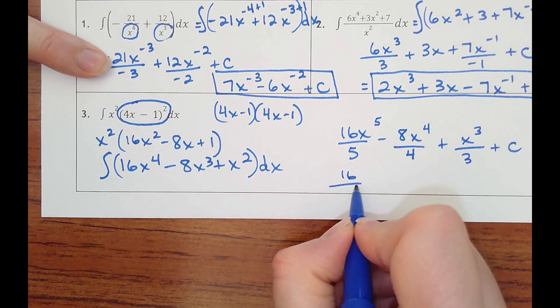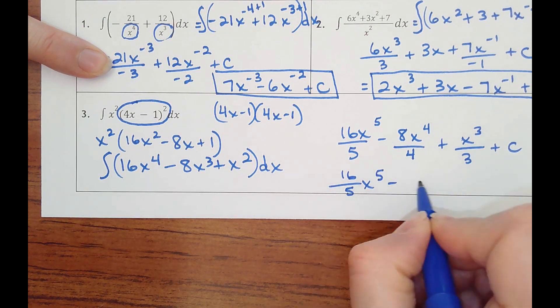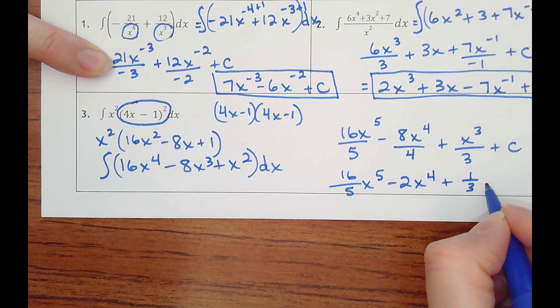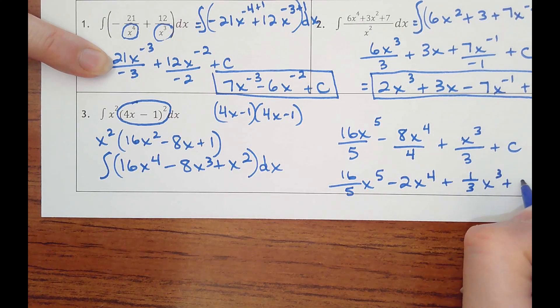I'd get 16 fifths x to the 5th, minus 2x to the 4th, plus a third x cubed, plus c.